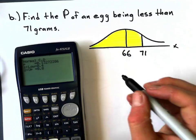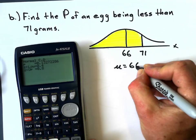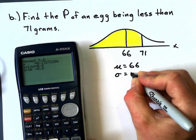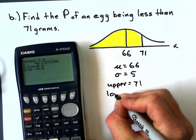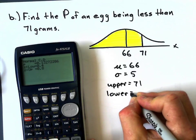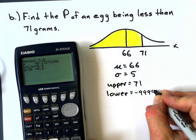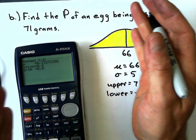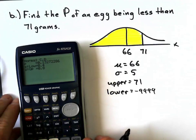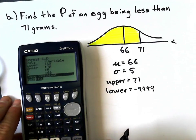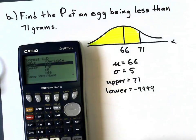So what I'm going to tell the graphics calculator is the mean is still 66, the standard deviation is still 5, my upper value is 71. Now my lower value, this is kind of a little bit cheeky, but my lower value I'm just going to give a really small negative number and just say negative 9999, just to say that it's going on there forever. Just to be safe, I'll give it an extremely low negative value.